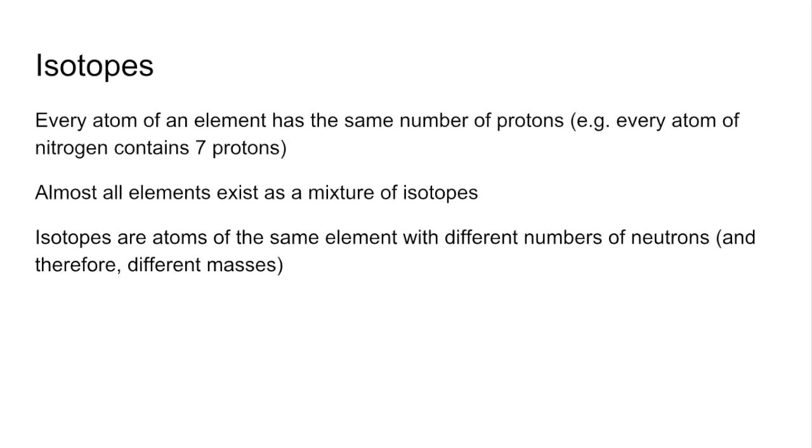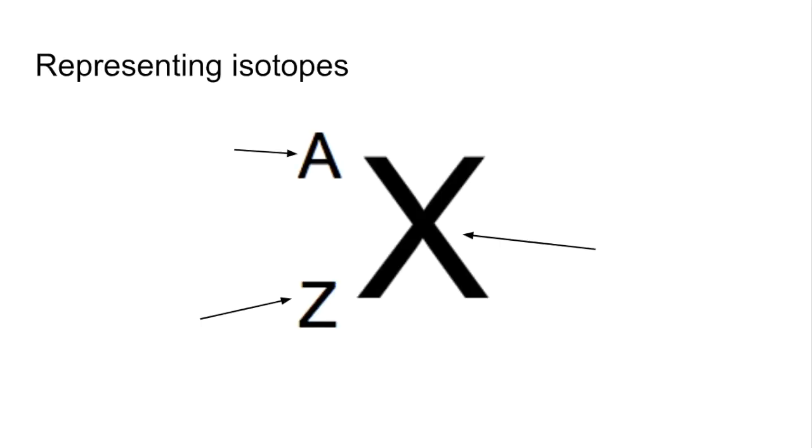So they've got the same number of protons but different numbers of neutrons and so that's going to give them different masses. So how do we represent isotopes? The X here is the element symbol.